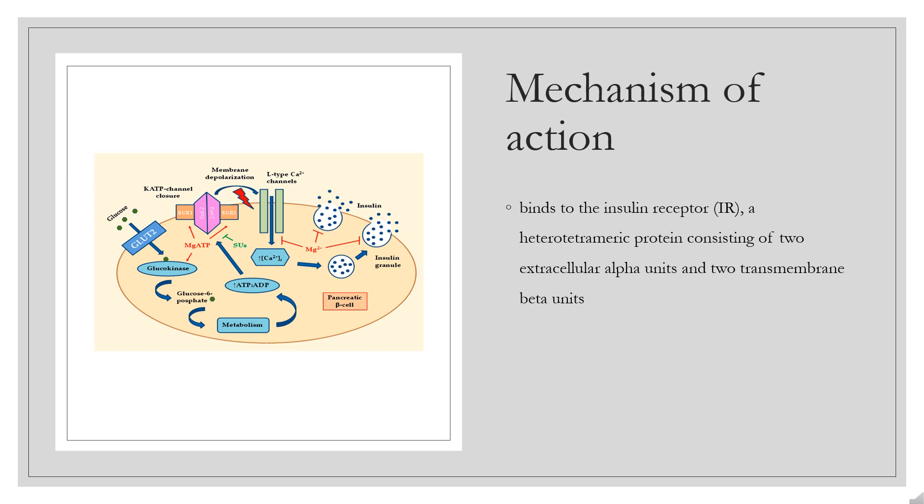Mechanism of Action: Insulin Lispro binds to the insulin receptor (IR), a heterotetrameric protein consisting of two extracellular alpha units and two transmembrane beta units. The binding of insulin to the alpha subunit of IR stimulates the tyrosine kinase activity intrinsic to the beta subunit of the receptor.